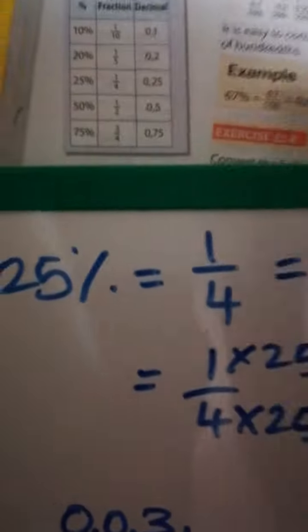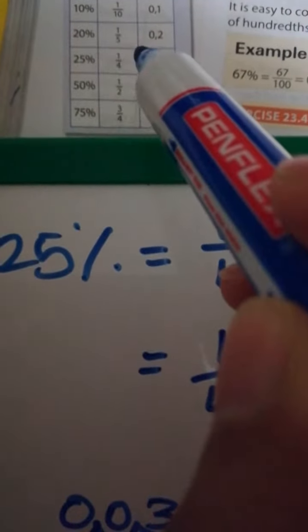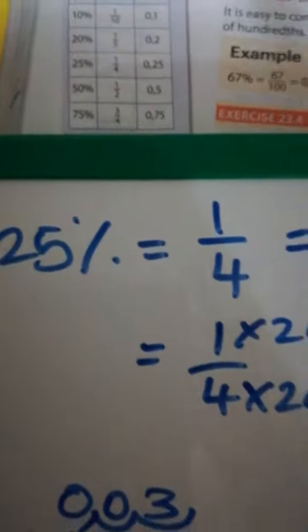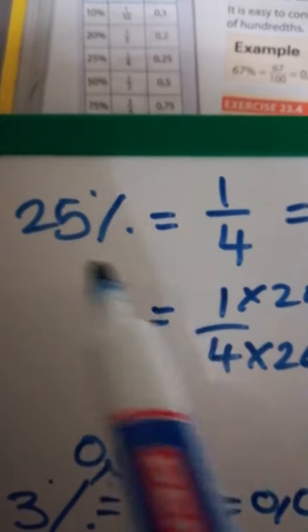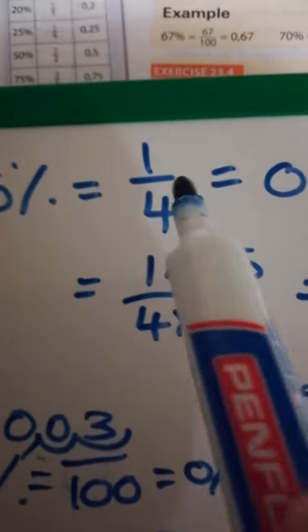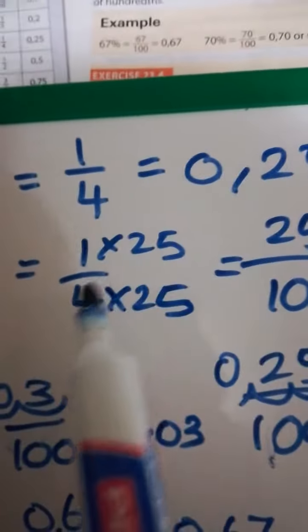So if you look here in the table, it says 25% equals a quarter which is equal to 0.25. I'm going to show you how that happens.